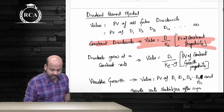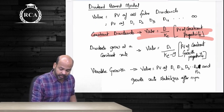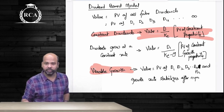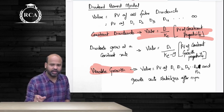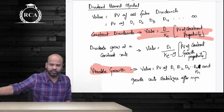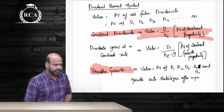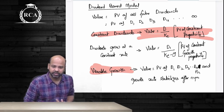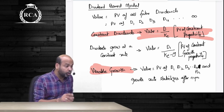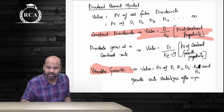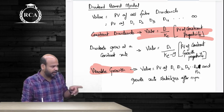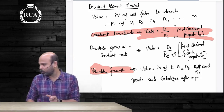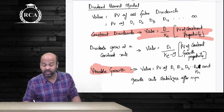The third case under the dividend discount model is variable growth rate. When the growth rate does not remain constant, you discount specific dividends separately and then also consider the price of the equity share at the point where the growth rate stabilizes. For example, if the growth rate is 20% for the first 5 years and then stabilizes at 10% after year 5, you can only use the constant growth perpetuity formula to compute P5. To compute P0, you write the present value of D1, D2, D3, D4, D5, and P5.